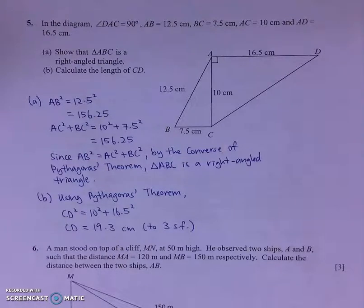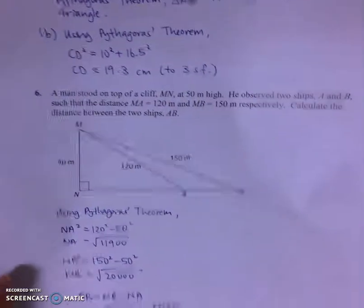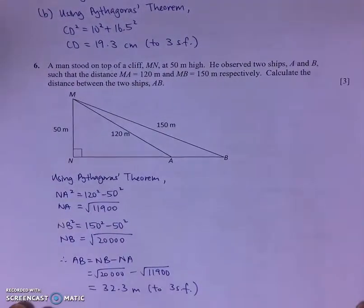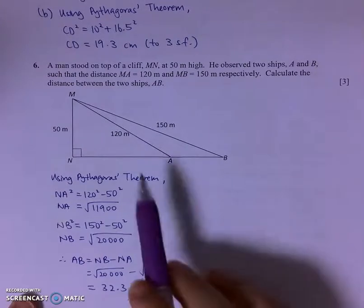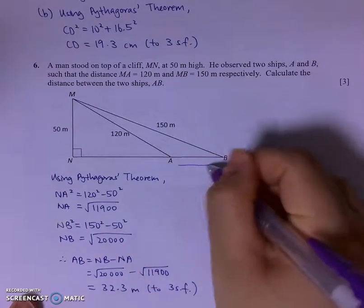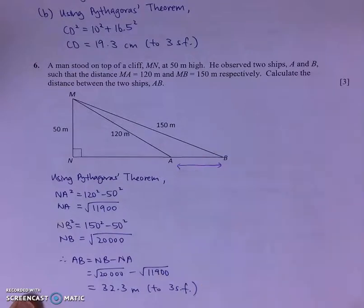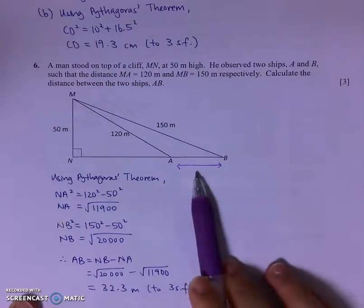Let's go on to question 6. For question 6, they want us to calculate the distance between the two ships, which is this. However, we are not able to find the distance directly.